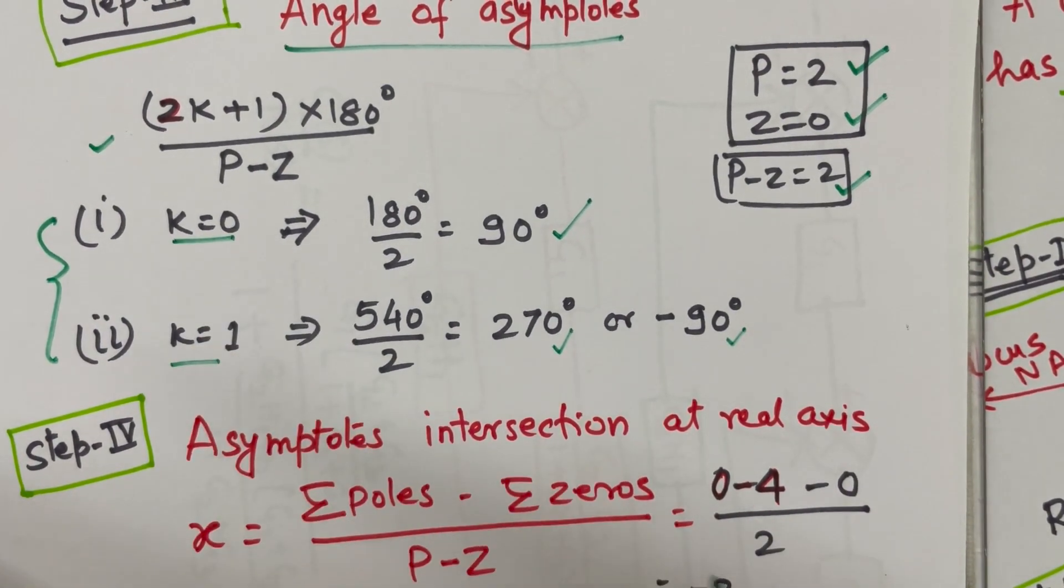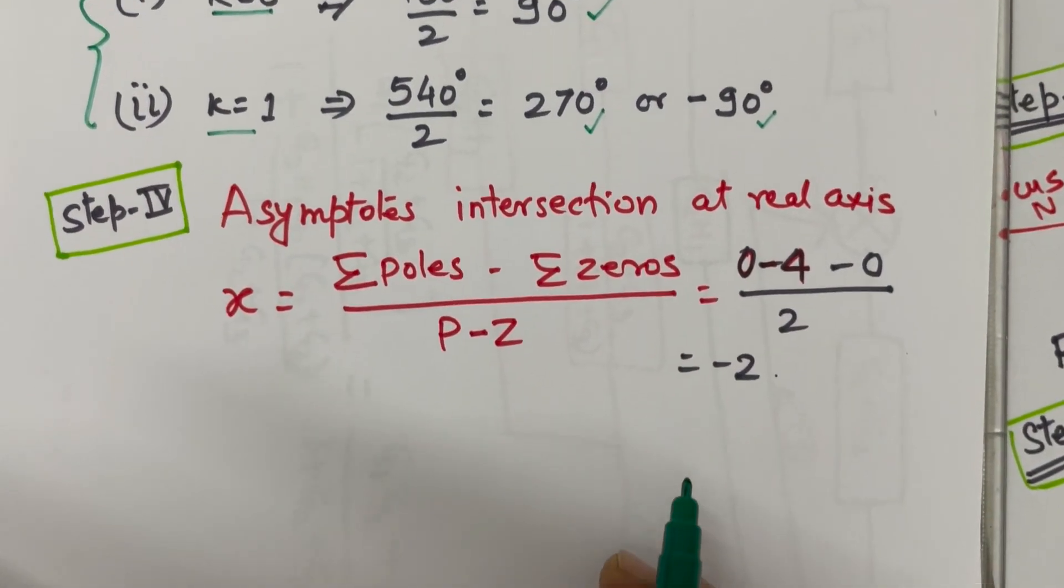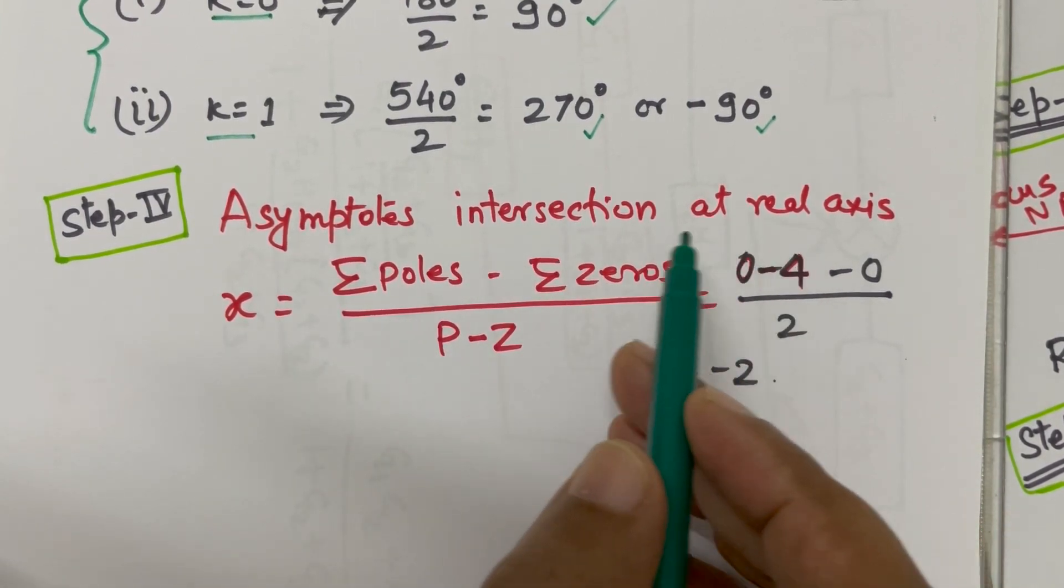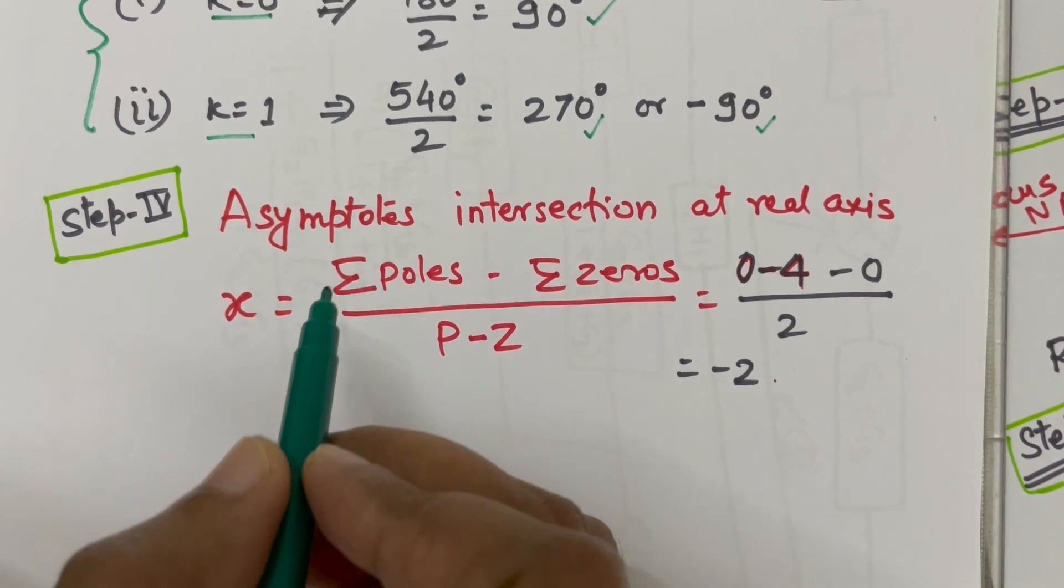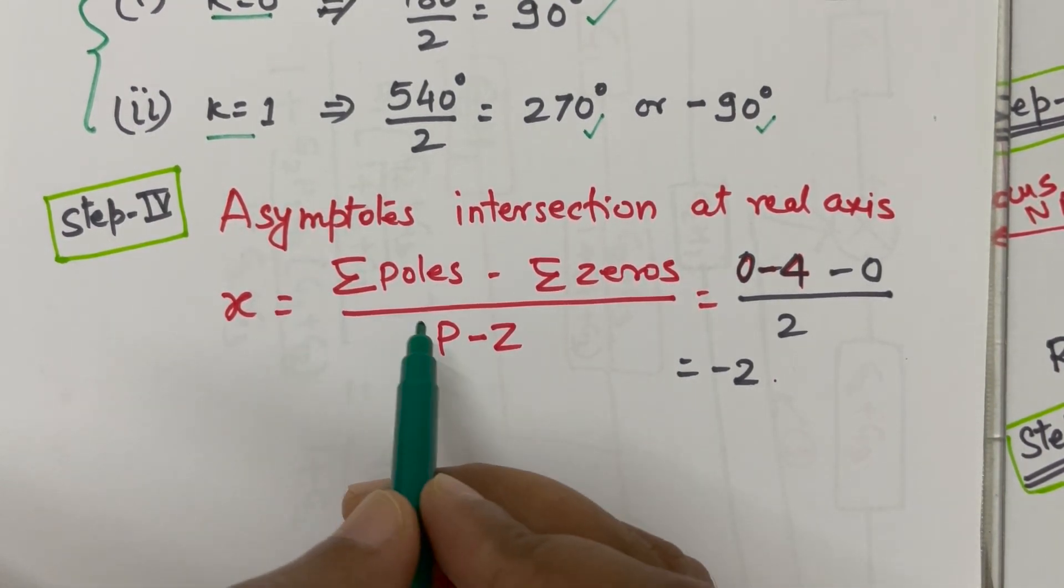So, these asymptote we will learn how to draw the asymptote. The next step is to find out the asymptote intersection at real axis. Where these asymptote will intersect the real axis that we are going to find out using a very simple formula.